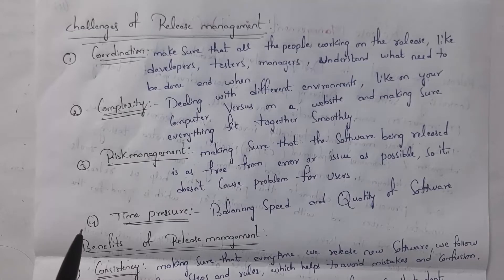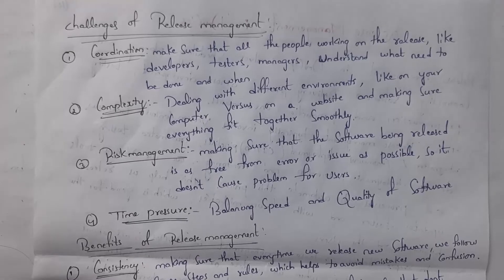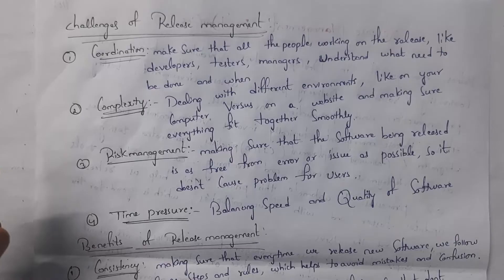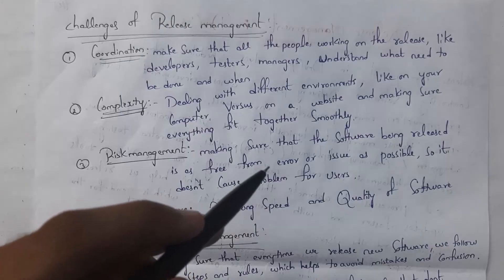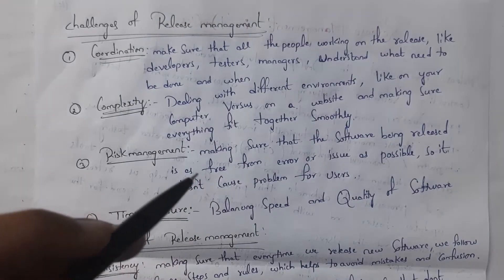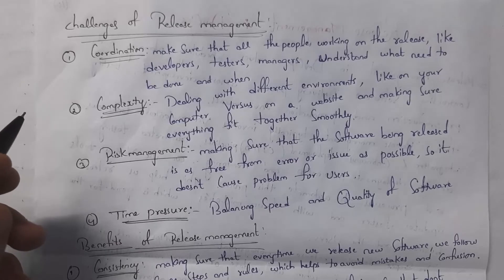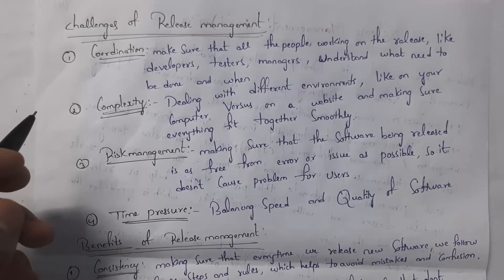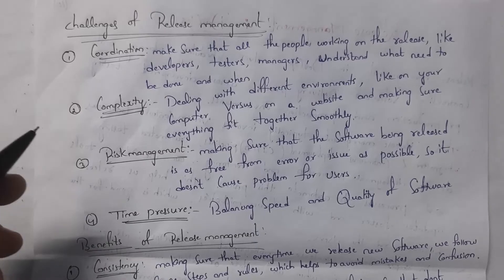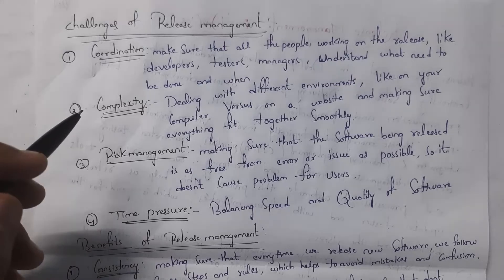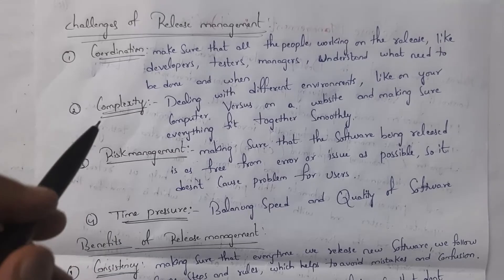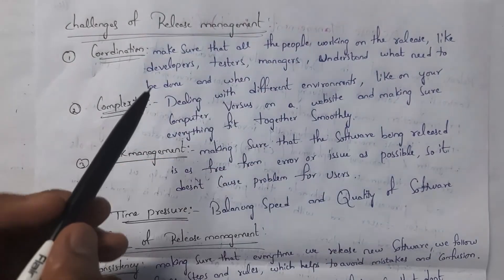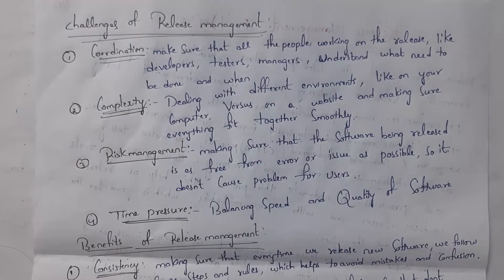These are some of the challenges in release management. First is coordination — when to develop and when to release software. All team members, including developers, testers, and managers, must coordinate with each other and release software as soon as possible. Second is complexity — for example, software may work on one system but not another, so you need to manage different environments, like your local computer versus a website, and make everything fit together smoothly.